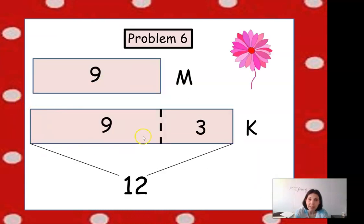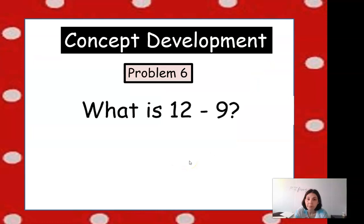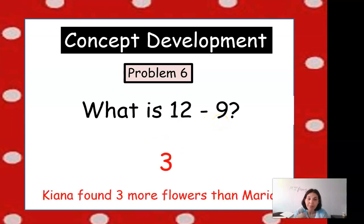And we know the total she found was 12. So the way to figure out how many more she found, you can count up from 9 to 12, or you can subtract 12 minus 9. You can do it either way: count up or subtract. So you can subtract 12 minus 9, it gives you 3. So Kiana found 3 more flowers than Maria.